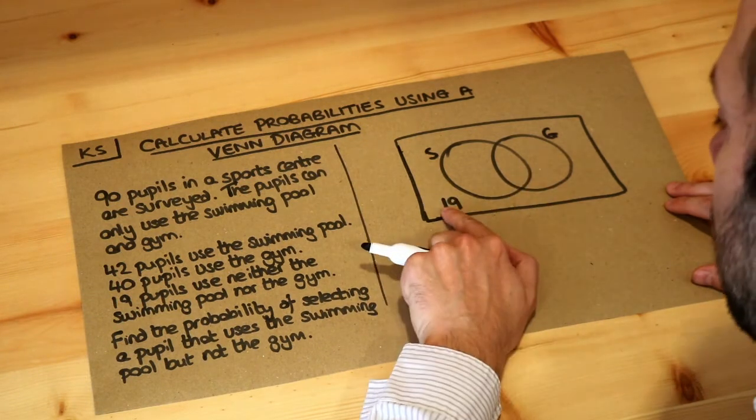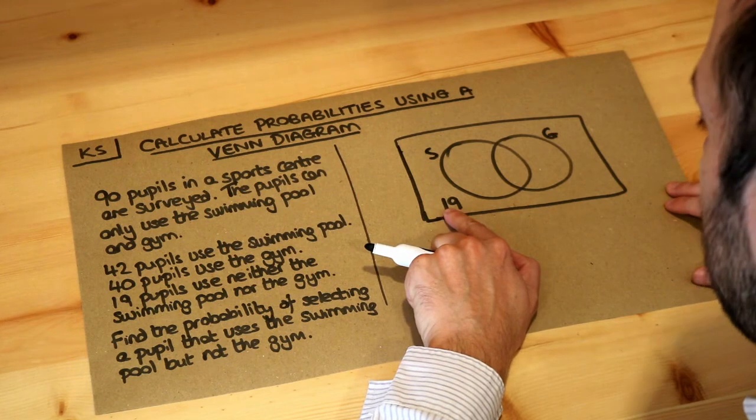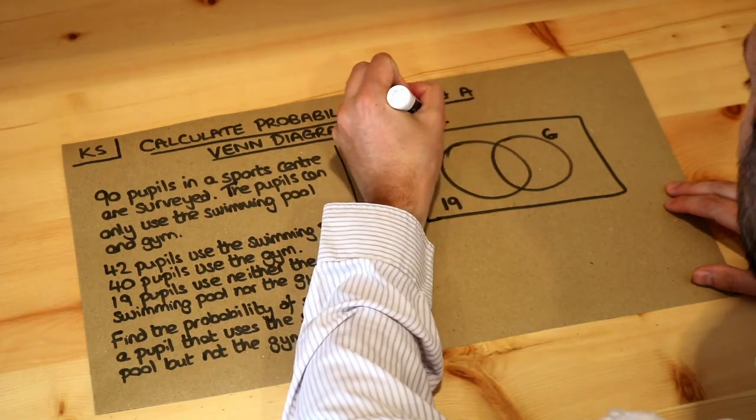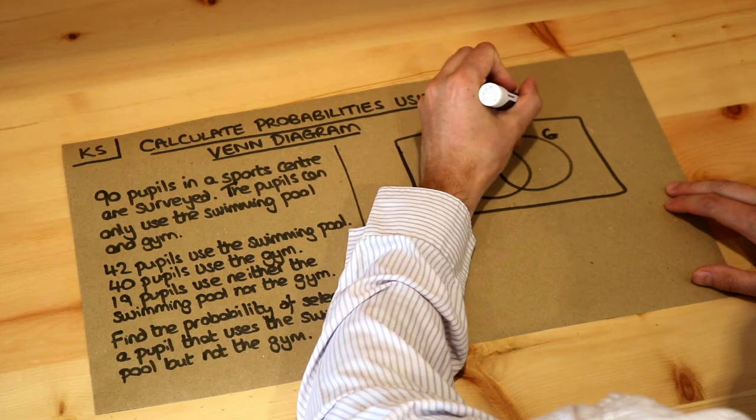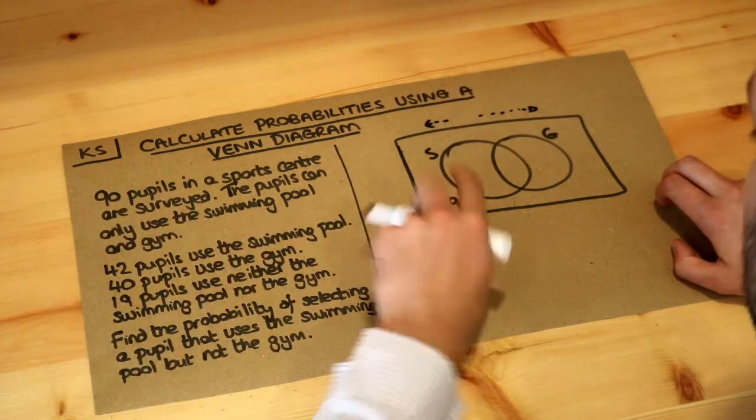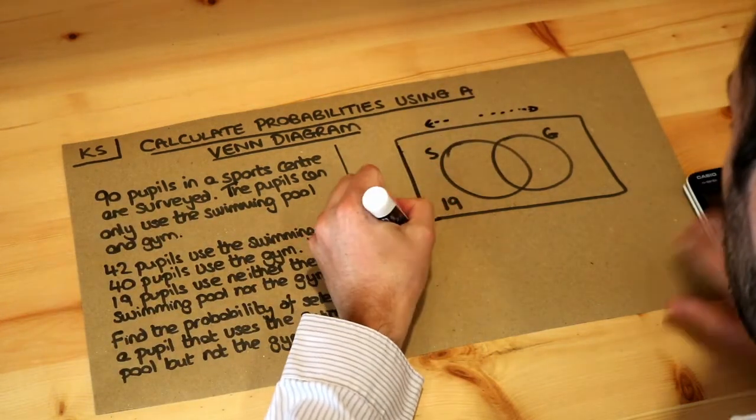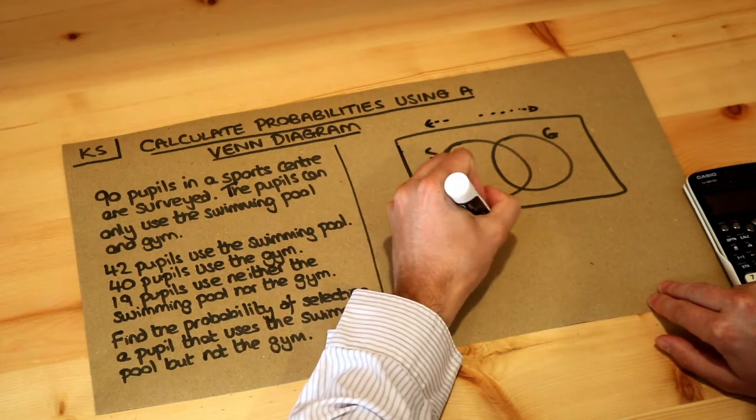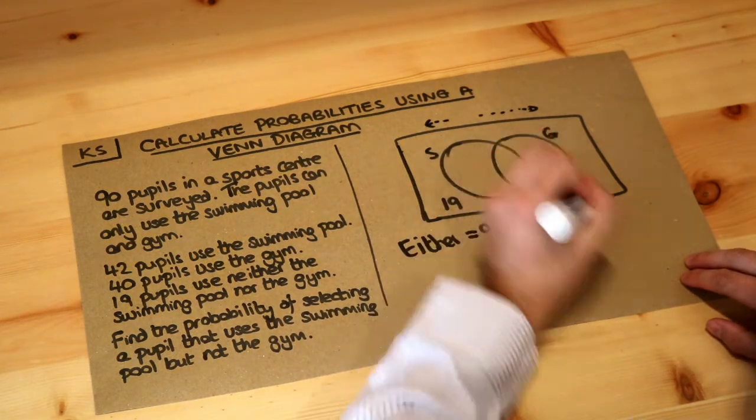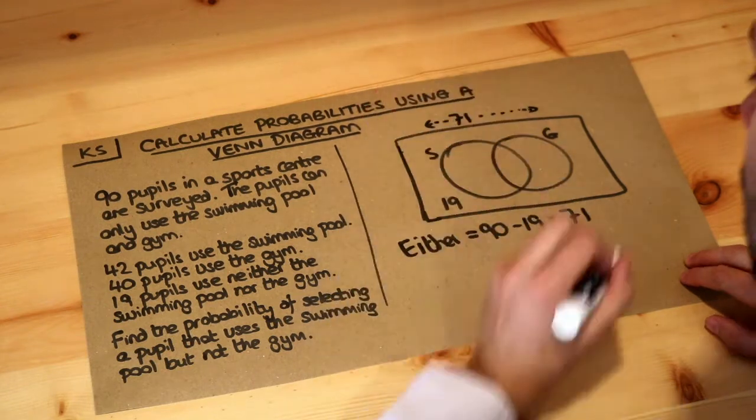But we do know that if 19 students didn't use either, the number of students who used either the swimming pool or the gym is just 90 minus 19. So who used either was 90 minus 19 and that's 71. So 71 students used either.